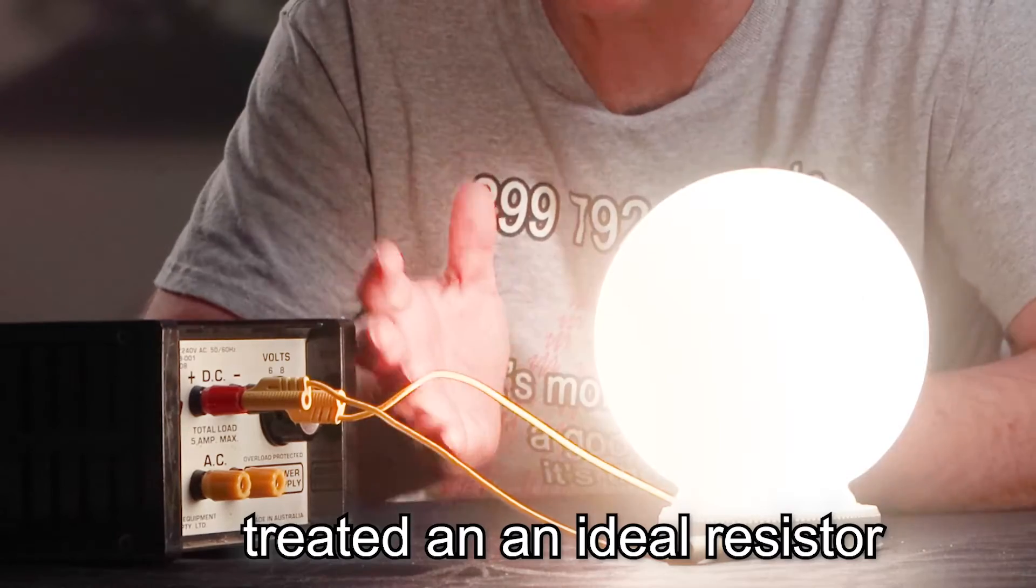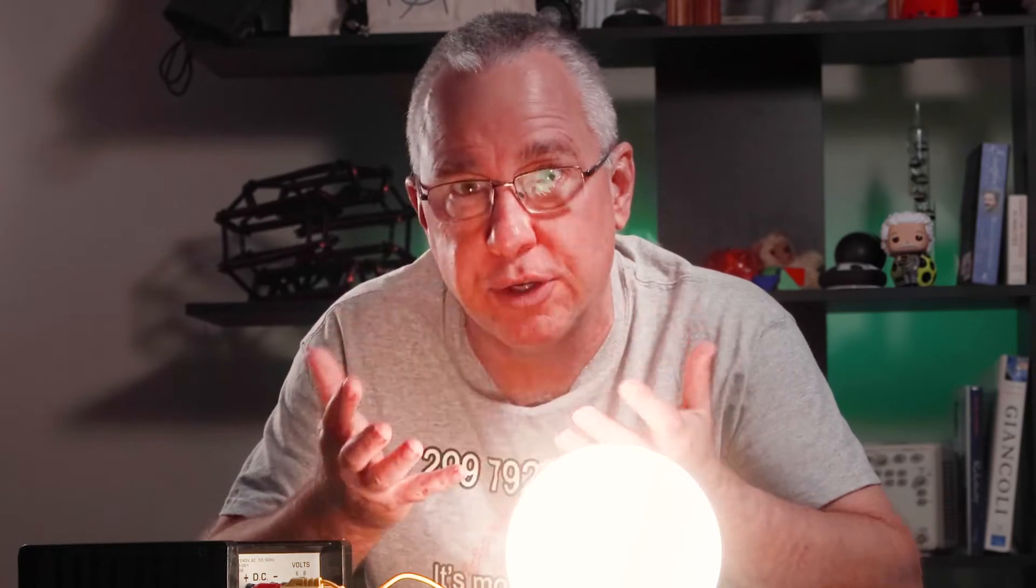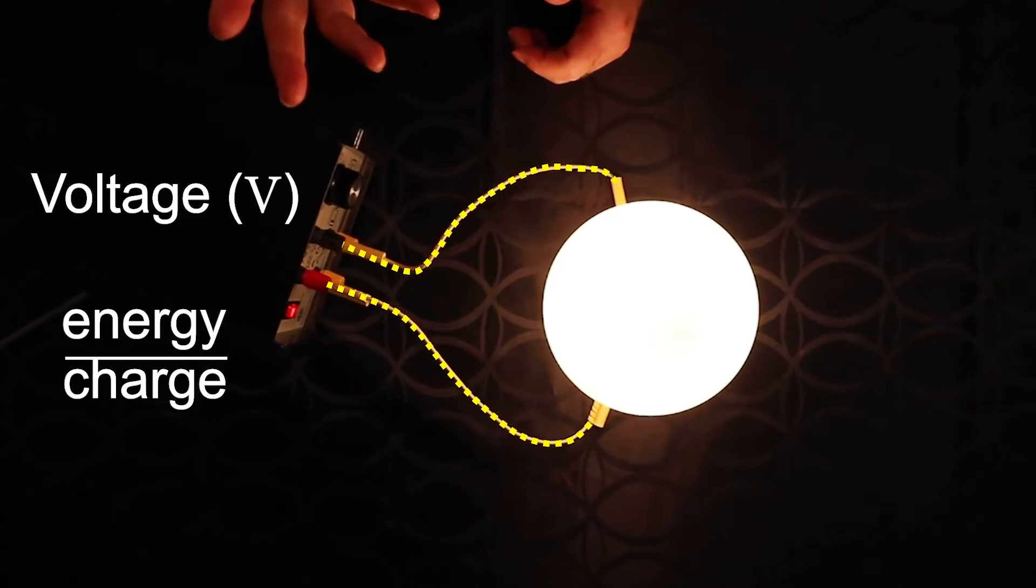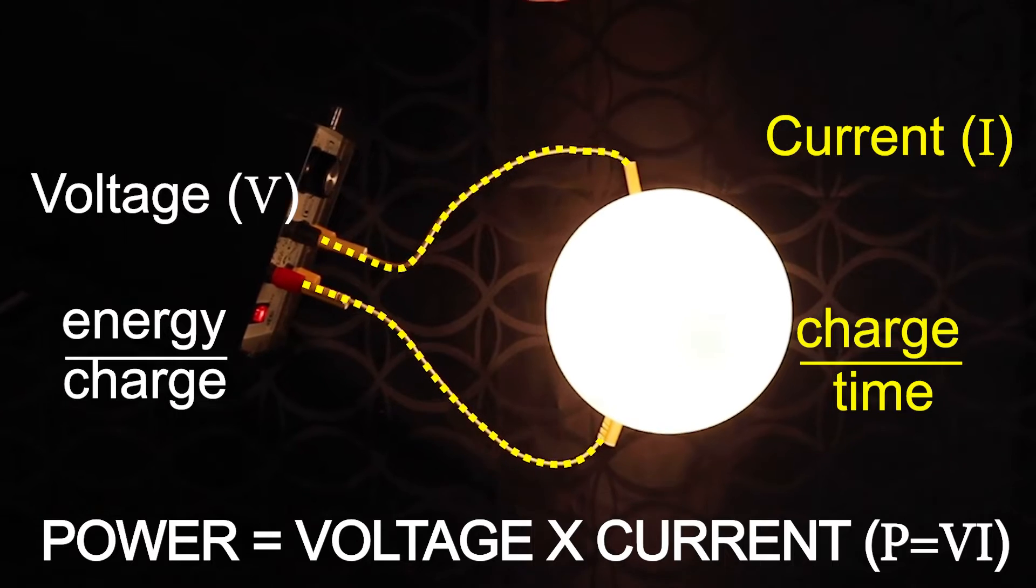When we connect a globe to a power supply, we are supplying a certain amount of energy for the globe to transform electrical energy into light energy and it's observed by its brightness. But that energy is dependent on two things, the voltage and the current. So the rate of energy transformation or its power ends up being VI.